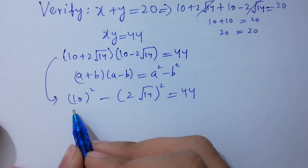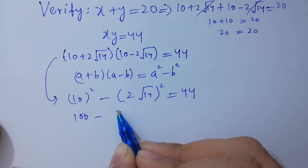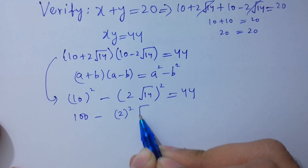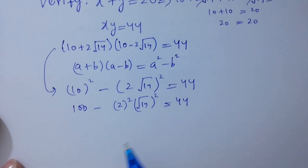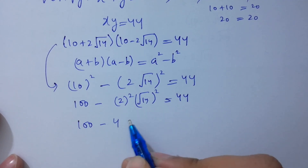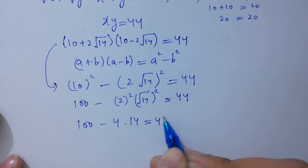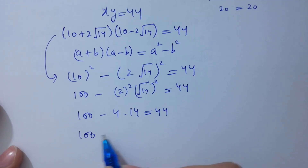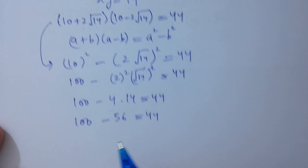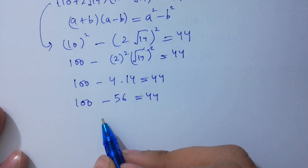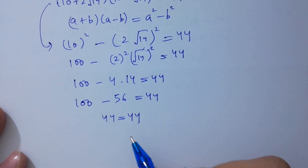10 times 10 gives 100, minus (2 square root of 14) squared. That is 100 minus 4 times 14, which is 100 minus 56, equal to 44. So 44 equal to 44, which satisfies the equation.